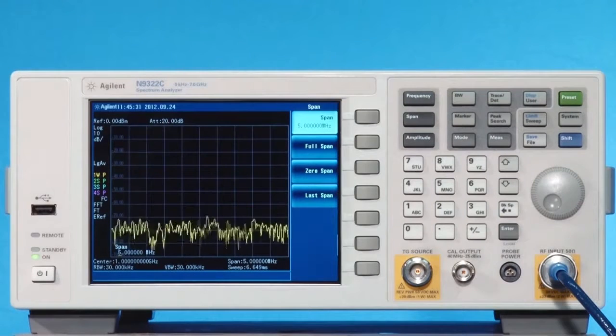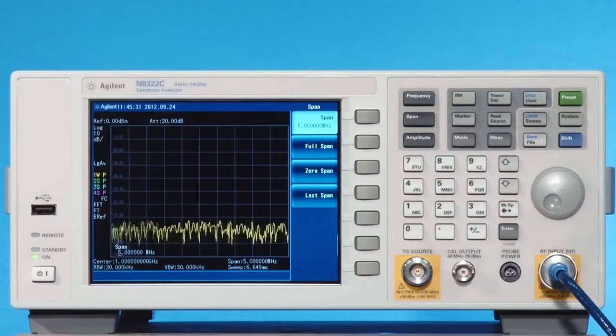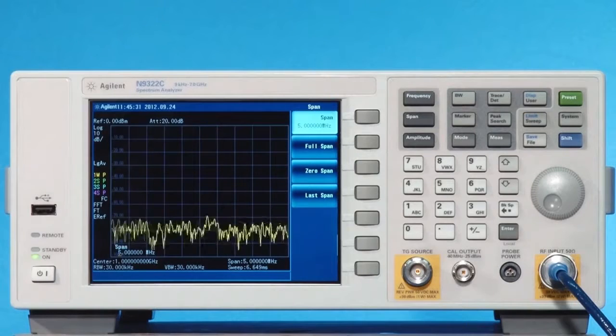Usually, we need to manually adjust the reference level and attenuator, then turn on the pre-amplifier to view such a low-level signal.